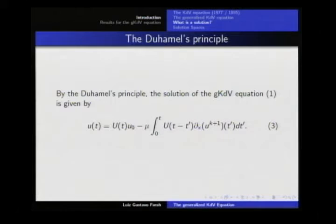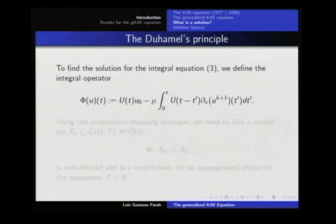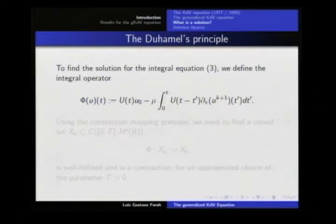Before that, I'm going to mention the solution for the nonlinear part. To do this we use the Duhamel principle. Using the Duhamel principle, the solution is given by the linear evolution plus an integral term associated to the nonlinear part. So for us, a solution of the equation will be u(t) satisfying this integral equality, where u appears on both sides.